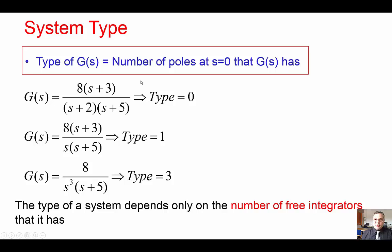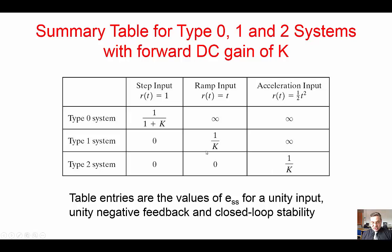Now you would remember the system type. System type is different from the order of the system. Type depends on the number of poles at S equals to zero, number of free integrators. For example, this first example here, transfer function, no free integrators, so it's type zero. Here we have one integrator, so it's type one. Here we have three integrators, so the system type three. So the system type depends on the number of free integrators. And depending on the system type, you get the steady state error values for different inputs. And here is the summary of the value of the steady state error as a function of the system type, for type zero, one, and two, and different input: step input, ramp input, and acceleration input.